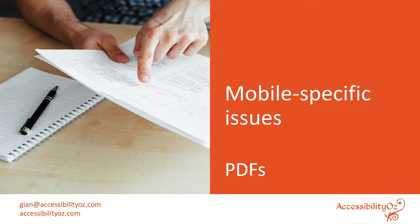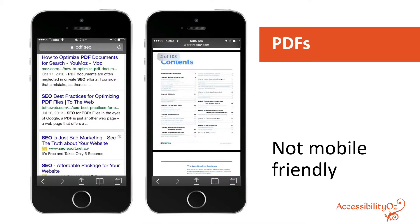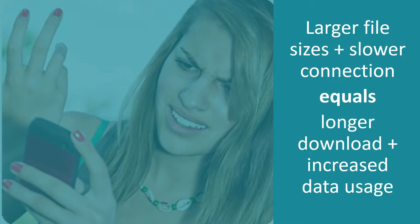Let's have a look at some of the serious mobile accessibility issues. PDFs — this is what happens when you hit a PDF on mobile. It doesn't reflow, it's not friendly to mobile, whereas a website flows and you can increase the text size. PDFs usually have larger file sizes than websites, and on a mobile device you have a slower connection speed, which means it takes longer to download and increases people's data usage — meaning unhappy customers. There are a couple of presentations on PDF accessibility on our website if you're interested.